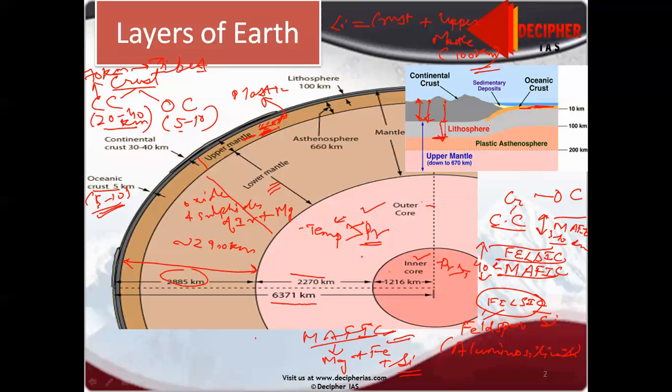After the lithosphere, we have asthenosphere from 100 to 250 kilometers. A plastic layer on which the lithosphere can move bodily. Various classifications differ because we still don't know exactly where asthenosphere ends. After asthenosphere, till 670 kilometers, we have upper mantle. Upper part is lithosphere plus asthenosphere. Lower part is solid portion till 660-670 kilometers.